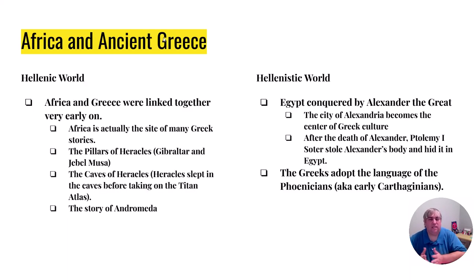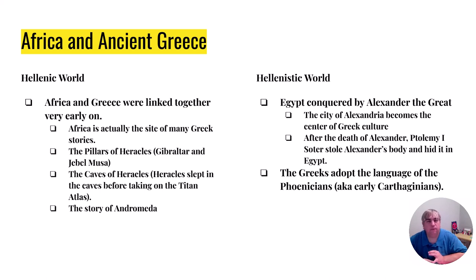A lot of ancient Greece had its basis in Africa. When Alexander the Great takes over the world, he makes Alexandria in Egypt the headquarters of Greek culture. Ptolemy steals Alexander's body, according to tradition, and hides it in Egypt — that's how important Egypt was to ancient Greece. The language of the Greeks was Phoenician, which was a culture in the Middle East that became part of the culture of Carthage. The pillars of Heracles and the caves of Heracles are in northern Africa, and the story of Andromeda happens in what would be today Ethiopia. So whether it's the Hellenic world of ancient Sparta and Athens or the Hellenistic world of Alexander the Great, both are very closely related to Africa.